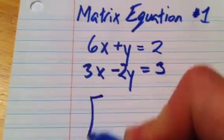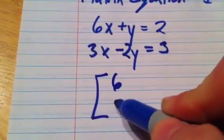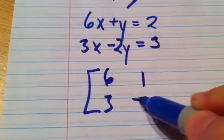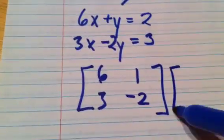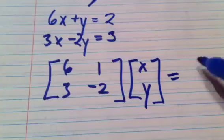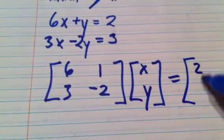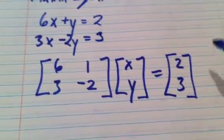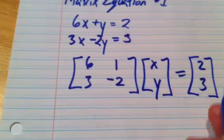To write this as a matrix equation, we're going to write our x's, then our y's, and then that matrix times xy will equal our answers 2 and 3. So there's our matrix equation.